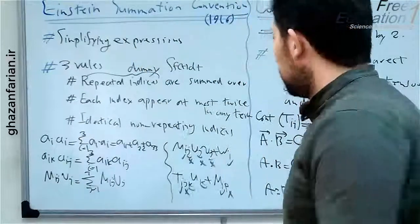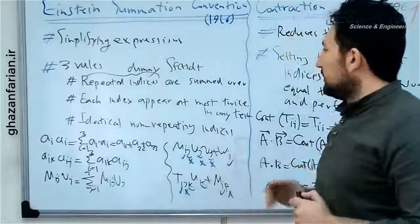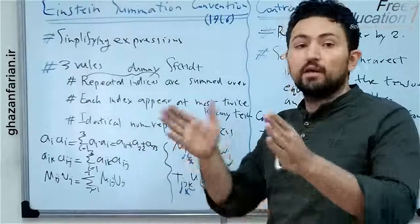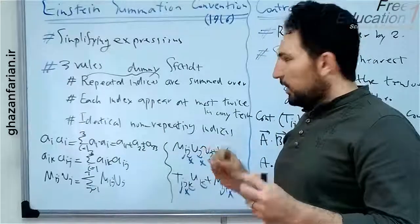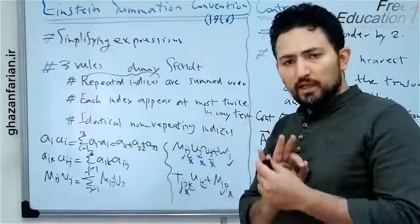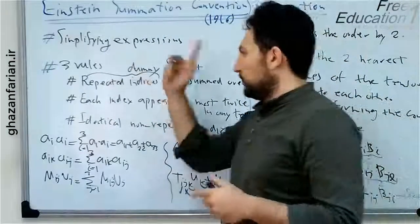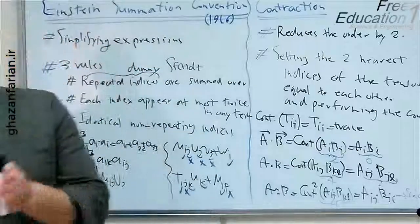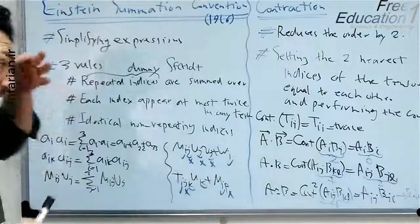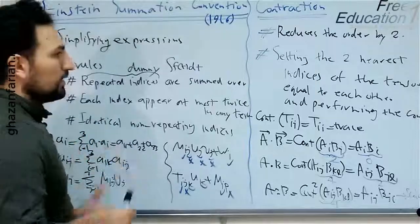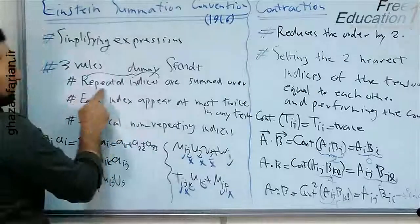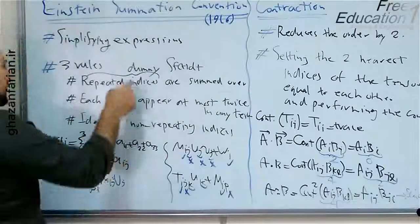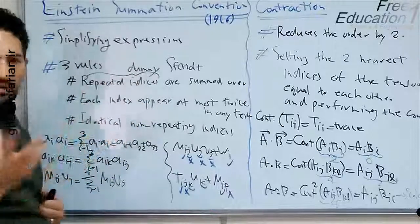Let's start the introduction. Einstein's summation convention is presented to simplify mathematical expressions — this is our final goal. We have to check three conditions or three rules. When we use indices in tensor algebra or in index notation, we have two kinds of indices: the first type is the repeated indices, and the other is the non-repeating indices. The other name for the repeated indices is the dummy indices.